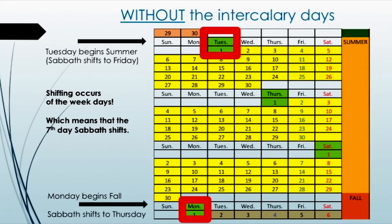Look at what happens if we don't add the intercalary days. When you get to the end of your spring season, the end of the third month, if you do not add a 31st day, the first day of summer would land on the third day of the week — it would move forward one day to Tuesday. If it moves forward one day, then the fourth day, your Shabbat, would actually occur on Friday, not on Shabbat. Then you can see how the days continue to shift into the fourth and fifth month and then into the sixth month.